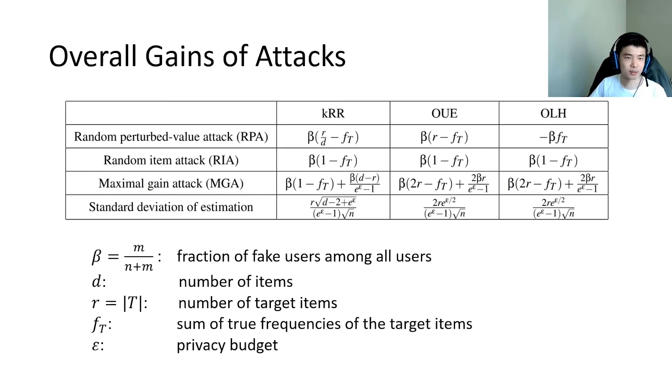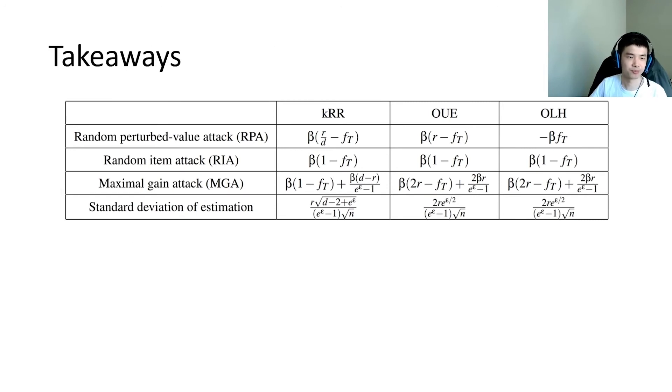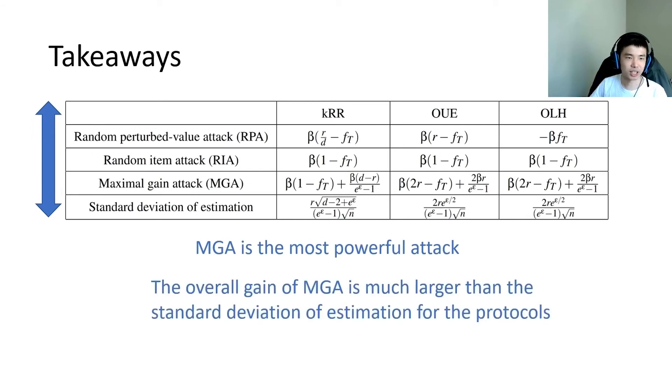We summarize the overall gains of attacks towards different protocols in this table. Here, we replace the values p, q, and C in previous equations with the parameters of the protocols. Here are some takeaways from the table. Comparing the different attacks, we can find that MGA achieves larger overall gains than the baseline attacks. And the overall gain of MGA is much larger than the standard deviation of the estimation for the protocols.